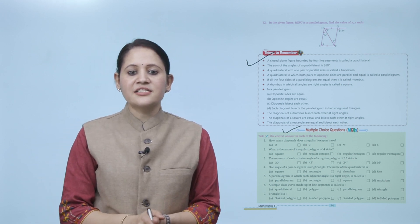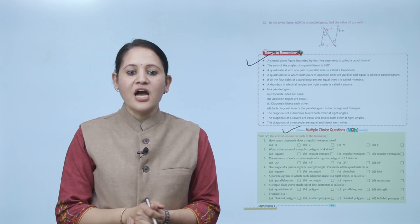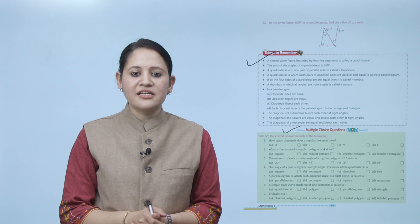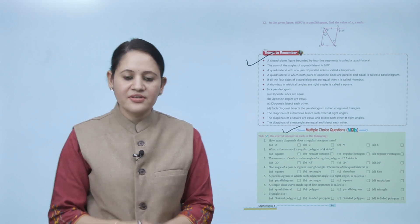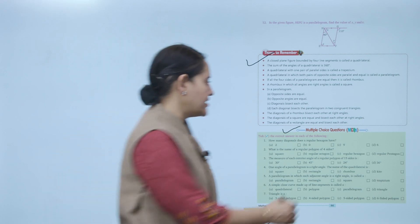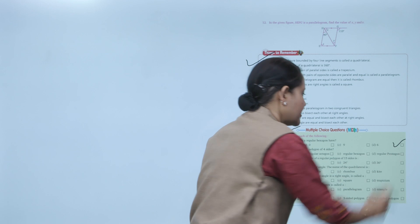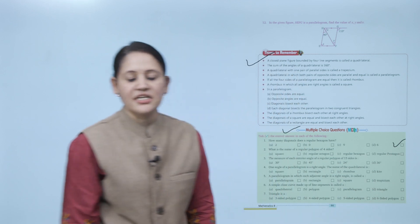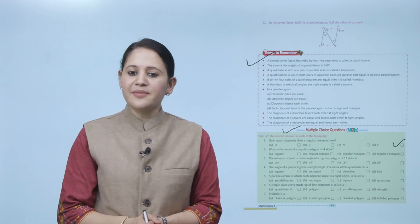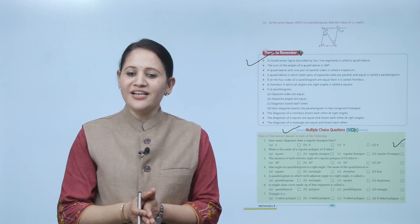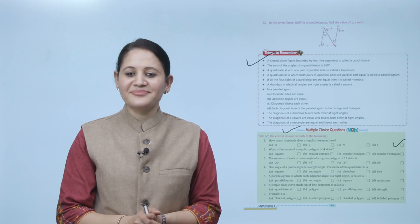Take the correct answer in each of the following. How many diagonals does a regular hexagon have? Answer: six — so the answer is D. We are now at the end of the chapter. I hope you understood it well. Now you have to practice it.